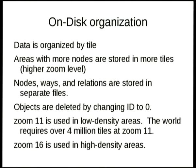To delete an object, I just change the ID to zero. When I scan through the file of nodes, I read the size, then read the ID — if the ID is zero, I skip over that many bytes to get to the next one. I'm using what they call Zoom 11, which splits the world into 2048 groups of latitude and 2048 groups of longitude — so you need four million tiles to store the entire world at Zoom 11. Then I'm going up to Zoom 16 for high-density areas, so we're talking millions of tiny little files.